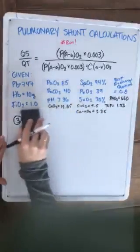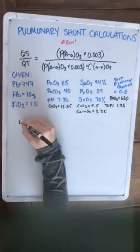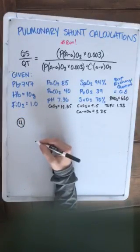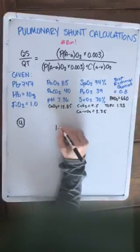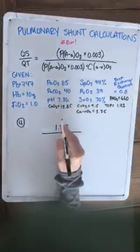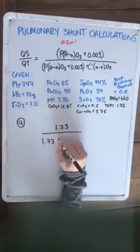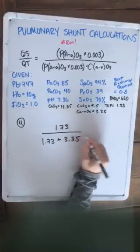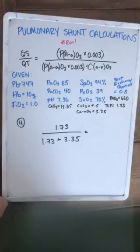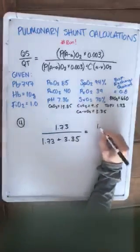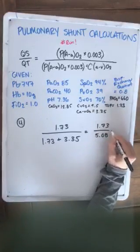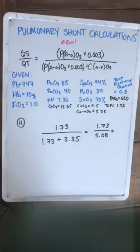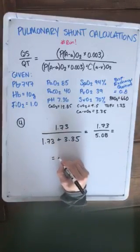Okay, moving on to our final step, step 4. Now that we have all our numbers that we need, we can calculate our pulmonary shunt. So we can do this by taking our top number there, which is our 1.73 that we figured out, which is also the same as our bottom number here, 1.73 plus 3.35. So 1.73 plus 3.35, and that gives us 0.34.